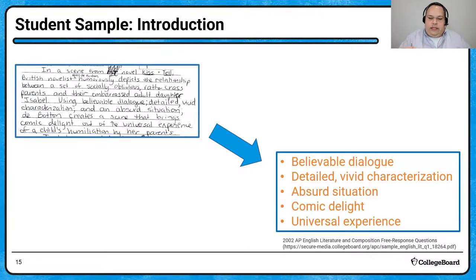So we take this introduction and we ask ourselves, where is this essay headed? And I pull these five bullet points. I see that this student is going to talk about believable dialogue. This student is going to discuss the detailed, vivid characterization, the absurd situation, the idea of providing comic delight, and the universal experience of the child's humiliation by her parents. Each of these could lead to a body paragraph. All stemming from the introduction, all stemming from the thesis, and therefore there's that string between the thesis, the topic sentence that opens the body paragraph, and ultimately the support and the commentary that is provided within that paragraph.